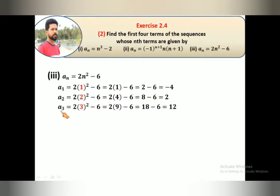Similarly find out third term. n = 3, 3² is 9, 2 · 9 is 18, 18 - 6 is 12.